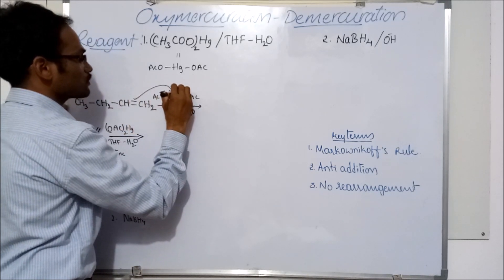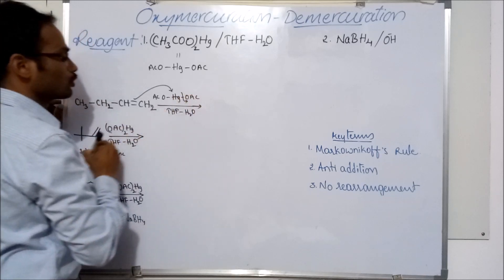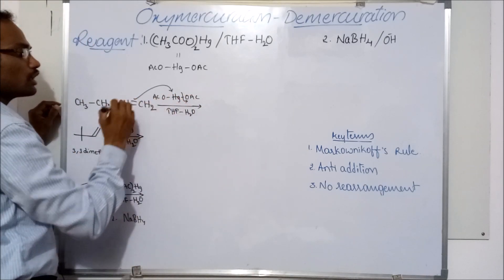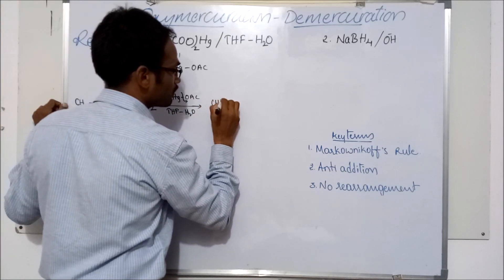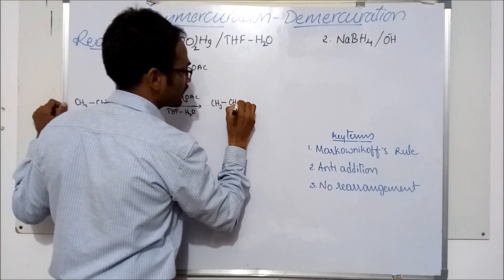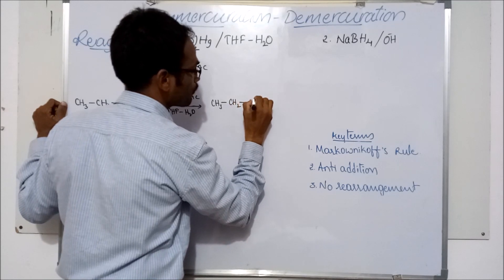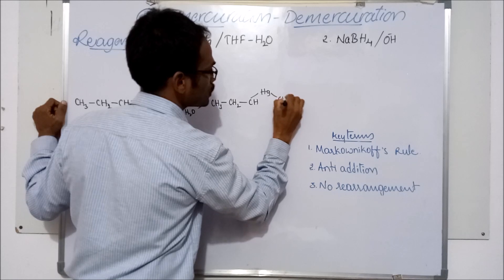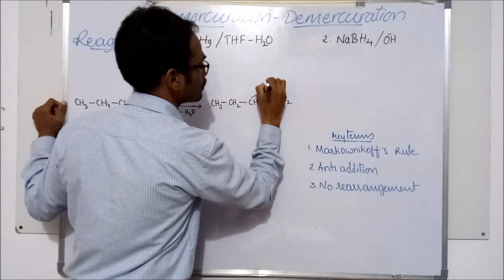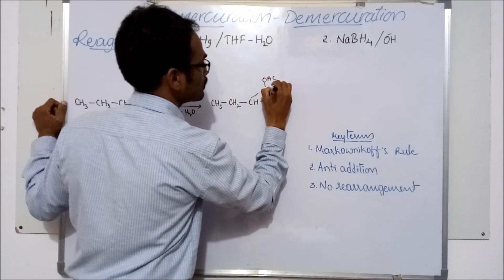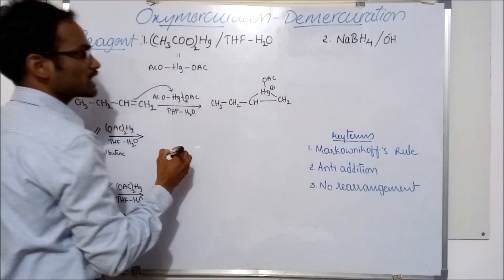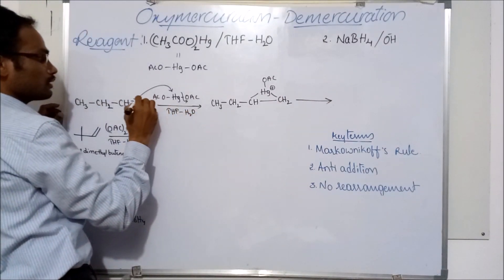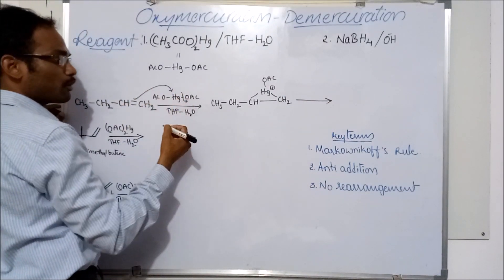The pi electrons shift towards mercury. Mercury forms a bond with both carbon atoms — that is, we have a cyclic ring structure: Hg–CH₂–OAc. This is called the mercurinium ion. Mercury is added from above the plane.